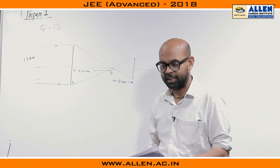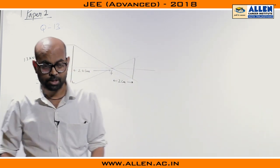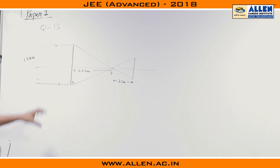Question number 13 of paper 1 is a question of optics. In this question, what they have given? There is a lens whose focal length is 20 centimeter and sun rays are coming on this which has an intensity of 1.3 kilowatt per meter square.